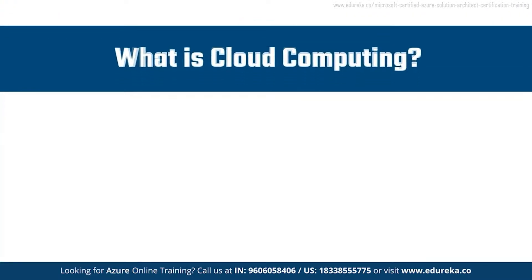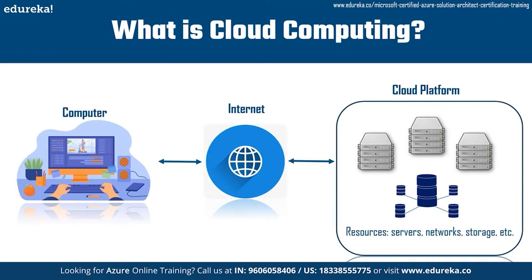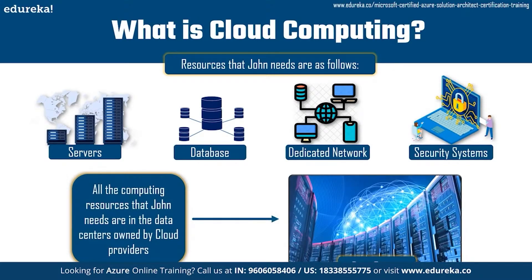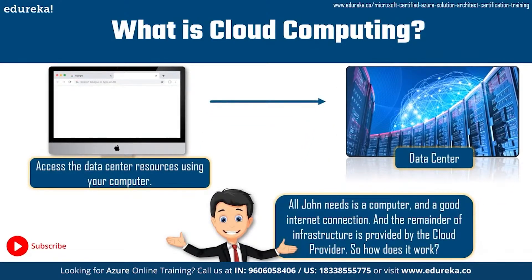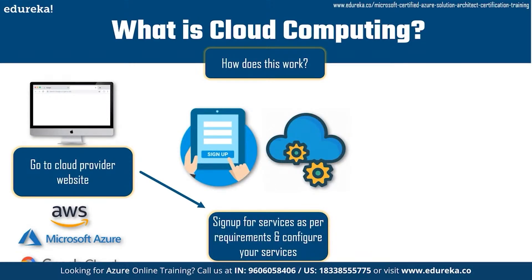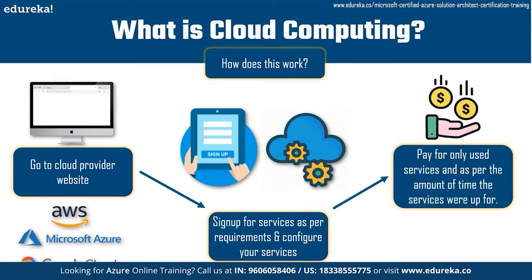John takes a computer connected to the internet and accesses resources on a cloud platform. Those resources are running on physical machines in data centers owned by cloud providers. All John needs is an internet-connected computer — the rest of the infrastructure is provided by the cloud provider. He goes to a cloud provider — Amazon Web Services, Microsoft Azure, or Google Cloud, the top cloud providers — signs up for an account, and configures the resources he needs. He only pays for the services he uses and for the amount of time those services were running.